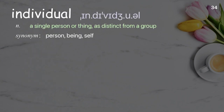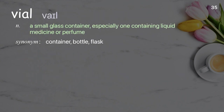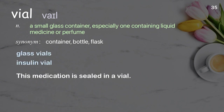Individual: a single person or thing as distinct from a group. Examples: a private individual, individual freedom, as an individual. He had the right to make his own decisions and live his life as he saw fit. Vial: a small glass container, especially one containing liquid medicine or perfume. Examples: glass vials, insulin vial. This medication is sealed in a vial.